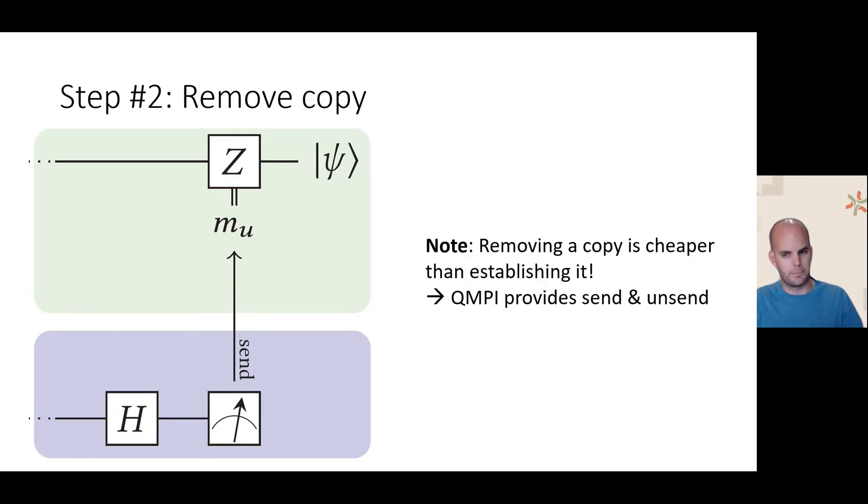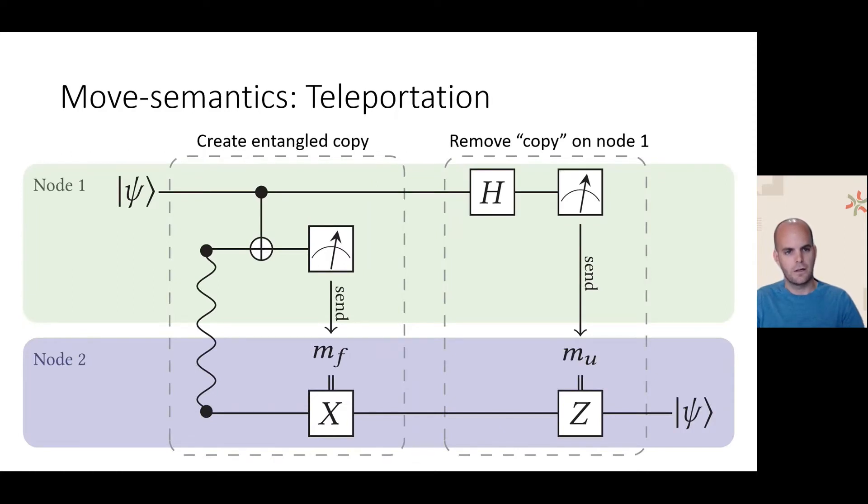All send receive functions in QMPI come in pairs. For example, there is QMPI receive and QMPI unreceive, or QMPI send and QMPI unsend. If instead of copying, we want to actually move a qubit from one node to another, we can combine the two circuits differently. We say that we do a send or receive with move semantics. And what this ends up being is quantum teleportation. We first create an entangled copy, then pretend the source qubit is the copy and eliminate that copy using an X basis measurement.